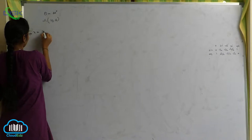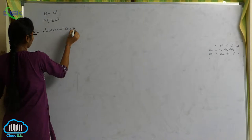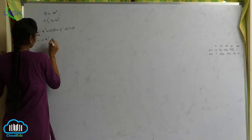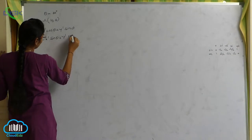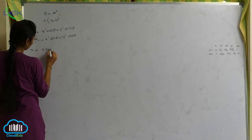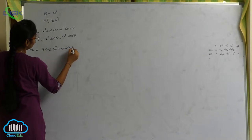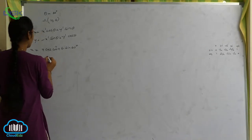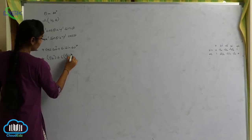Now x equals to x dash cos theta plus y dash sin theta. x equals to x dash under 4 into cos 60 degrees plus y dash under 6 into sin 60 degrees. So, 4 into cos 60 is 1 by 2, plus 6 into sin 60 is root 3 by 2.